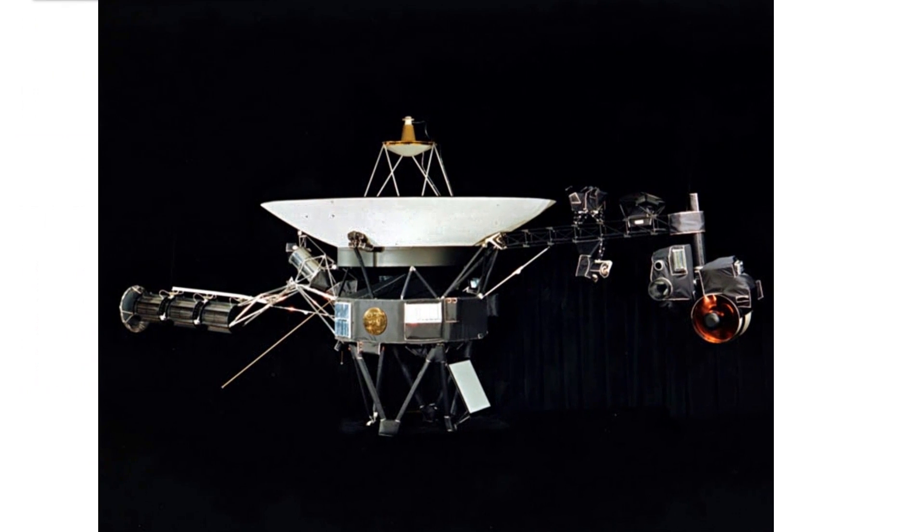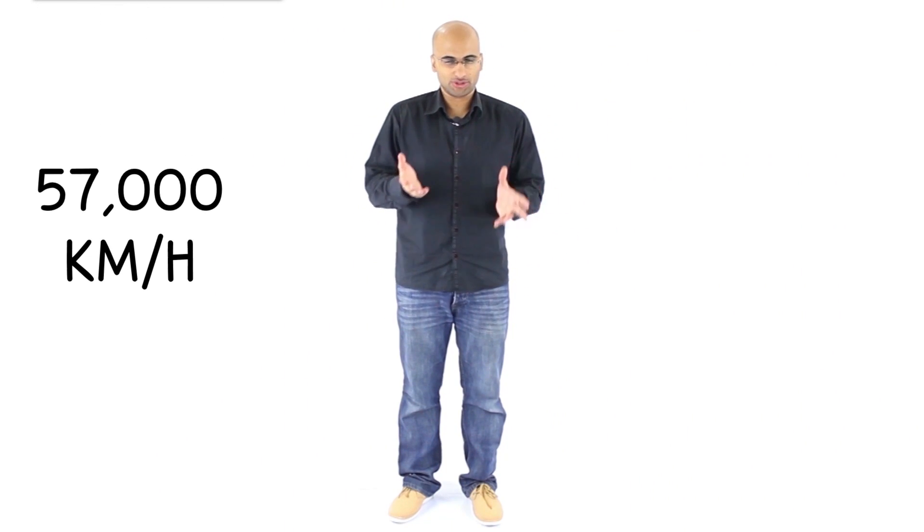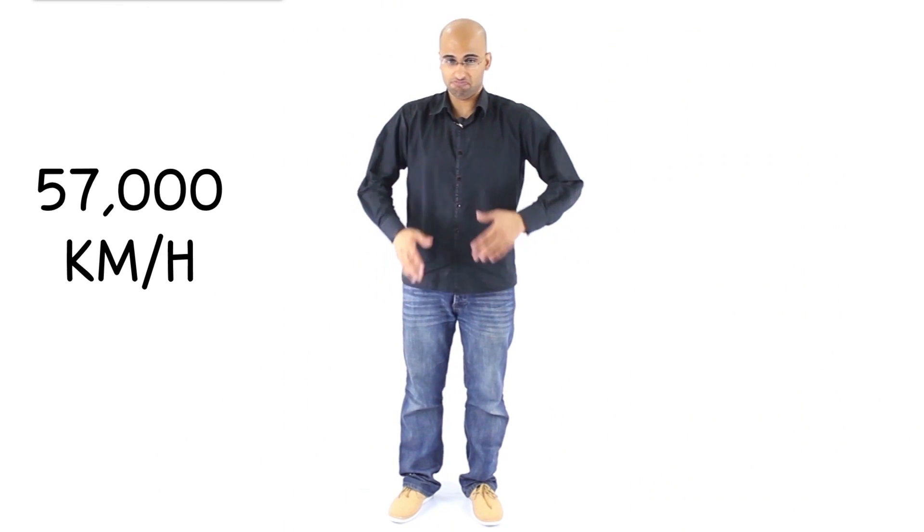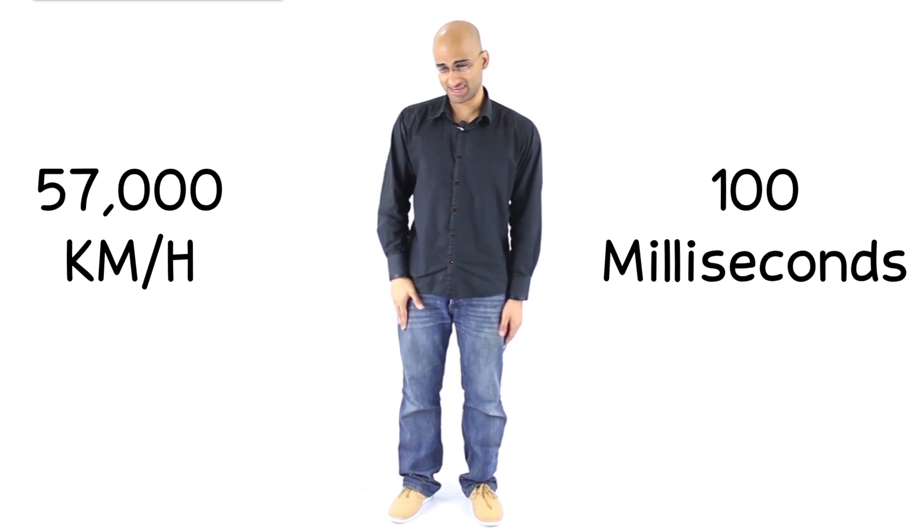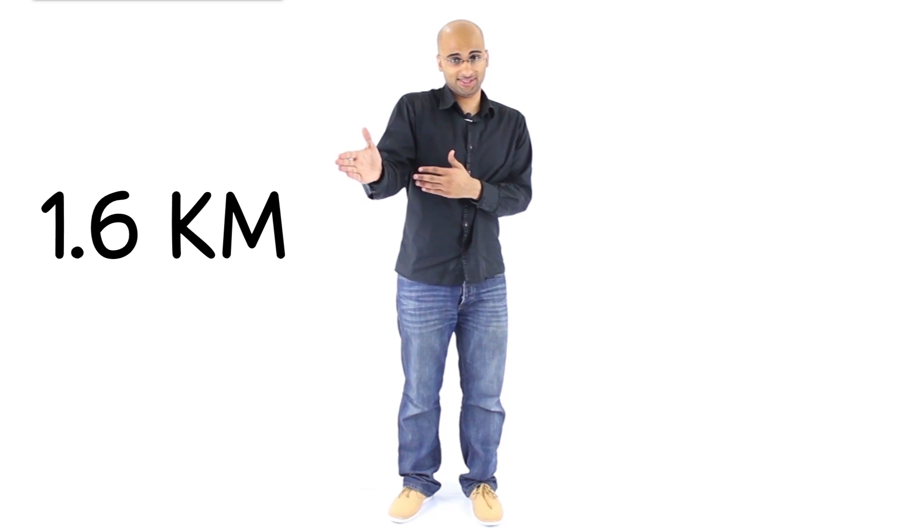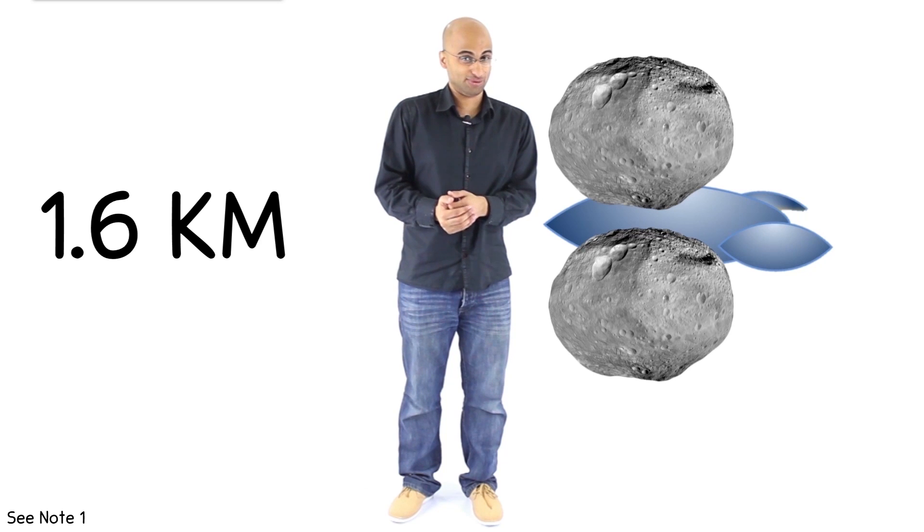One of our still earthly spaceships, which is still out there today, almost out of the solar system, the Voyager 1, travels at about 57,000 kilometers per hour. If our hero was traveling at that speed, by the time his measly 100 milliseconds reaction kicks in and tells him to turn, he would have already gone 1.6 kilometers in front. And at that point he would probably be an asteroid sandwich.